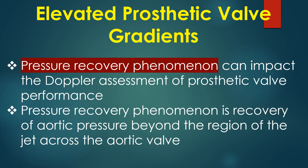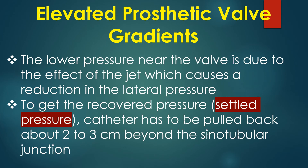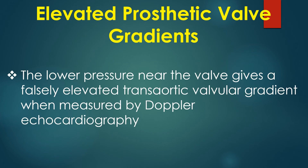Pressure recovery phenomenon can impact the Doppler assessment of prosthetic valve performance. It refers to the recovery of aortic pressure beyond the region of the jet across the aortic valve. The lower pressure near the valve is due to the jet effect causing a reduction in lateral pressure. To get the recovered or settled pressure, the catheter has to be pulled back about 2-3 cm beyond the sinotubular junction. This lower pressure near the valve gives a falsely elevated trans-aortic valve gradient when measured by Doppler echocardiography.